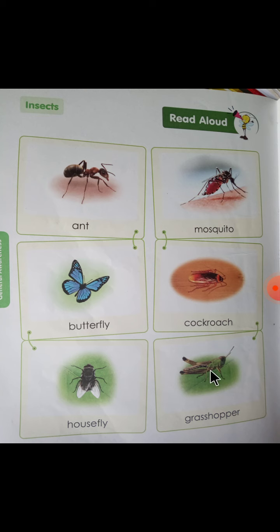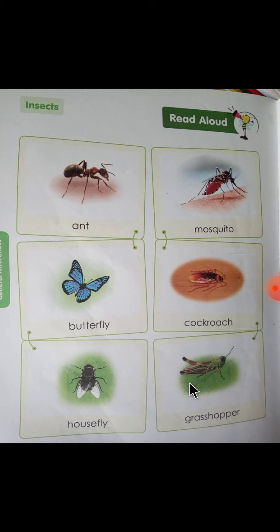Next is Grasshopper. इसको आपने कहाँ देखा होगा? घास पर — जैसे green color की घास होती है, वैसे ही इसका color रहता है। ये jump करती है यहाँ से वहाँ। Grasshopper भी insect है।